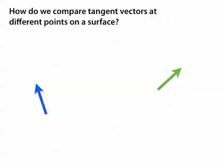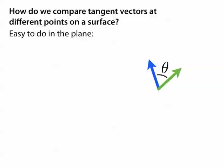This is easy to do in a flat space like the plane because we can just slide one vector over to the other and then compute the angle between two vectors or do whatever else we need to do.